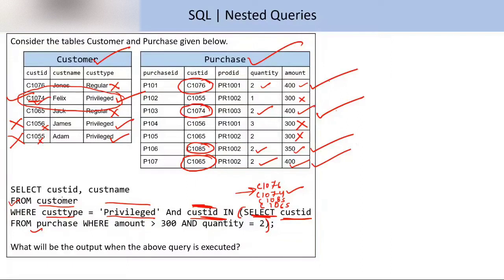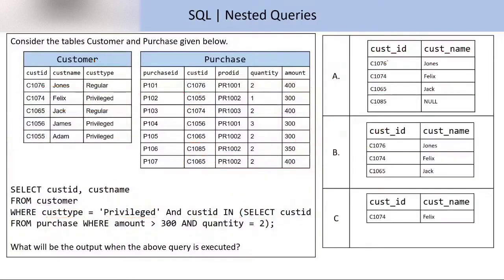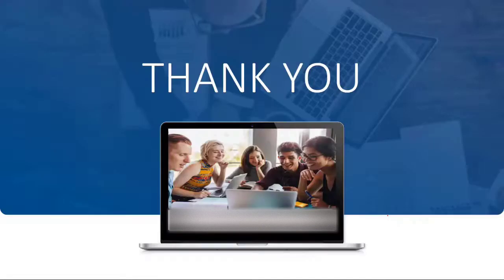We go to the SELECT part and select customer ID and customer name. The final result is customer ID 1074 and customer name Felix. So the output is 1074 and Felix — the correct answer is option C. This is all about nested query. Hope you understood what nested query is all about. Thank you so much.